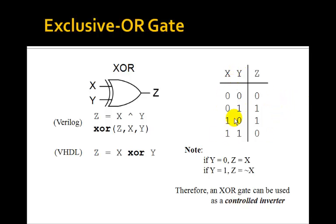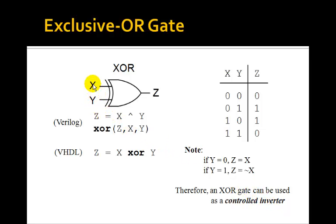Let's take a look at the truth table. Notice that if Y is equal to 0, then the output Z is the same as X. On the other hand, if Y is 1, then the output Z is the opposite of X — that is, NOT X. Therefore, we can use the exclusive OR gate as a controlled inverter. If you want to just let X get through, then you make Y 0. And if you want Z to be NOT X, just let Y be equal to 1.